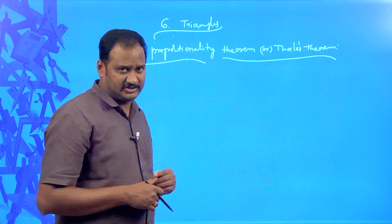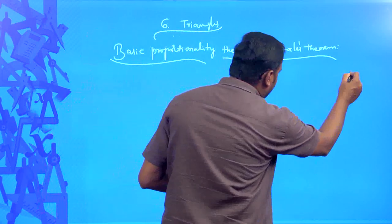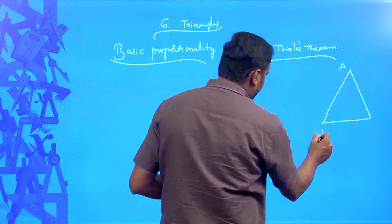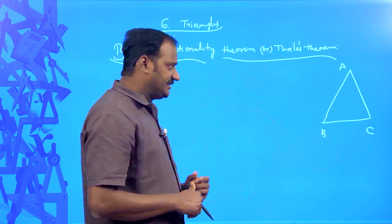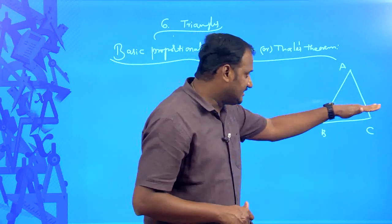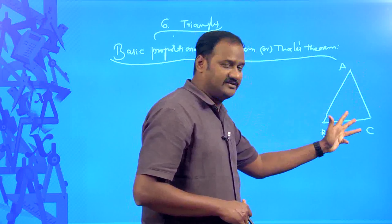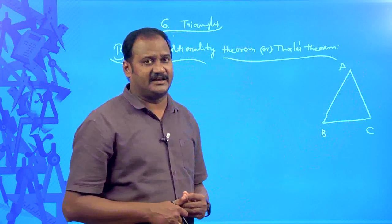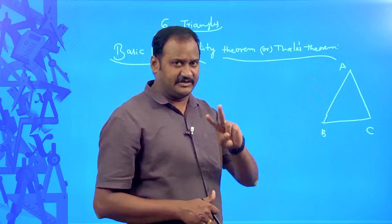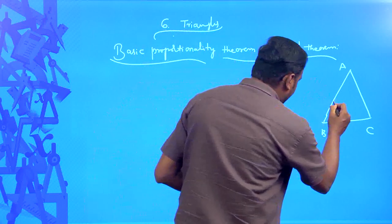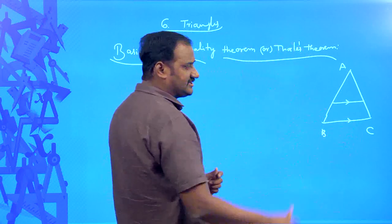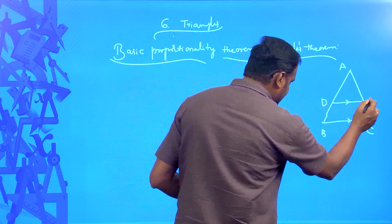What is this theorem all about? Suppose you draw a triangle. Let us name this triangle ABC. If you draw a line parallel to one of the sides — you can draw parallel to BC, or parallel to AC, or parallel to AB — then definitely it intersects the other two sides in two distinct points. This line drawn parallel to BC intersects the other two sides AB and AC at two distinct points D and E.